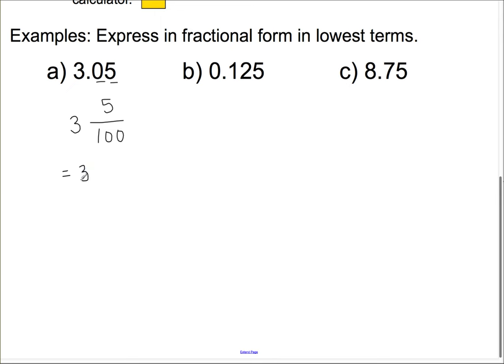And if I reduce to lowest terms, I know 5 goes into 5 one time. And 5 goes into 100 twenty times. So, my new fraction is 3 and 1 over 20.